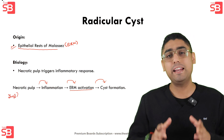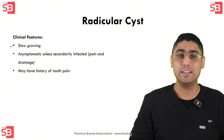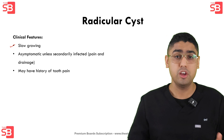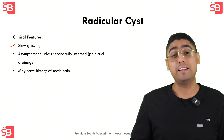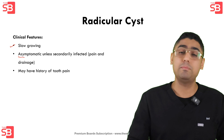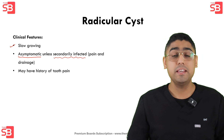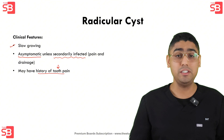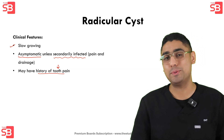Let's go over some clinical features of radicular cysts. First, radicular cysts are slow growing — they expand gradually over time, which means they can often go unnoticed for a very long period since they don't cause immediate or aggressive changes. They are typically asymptomatic unless secondarily infected. Patients may also have a history of tooth pain, either recent or from a while back, which helps connect the cyst to a previously non-vital tooth.